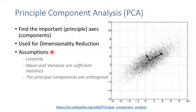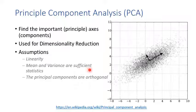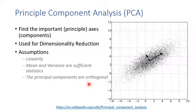There are key assumptions of PCA. First is linearity — it assumes data are linear. Second, mean and variance are sufficient statistics, so we use the axis with largest variance to represent the data. Third and most important: all principal components are orthogonal to each other. PCA finds multiple orthogonal axes — the first principal component and the second principal component — which are perpendicular.